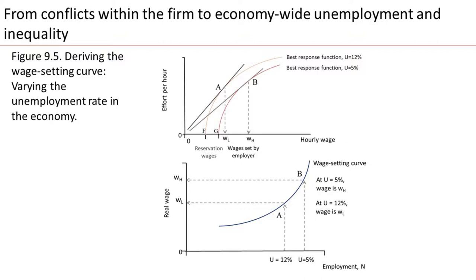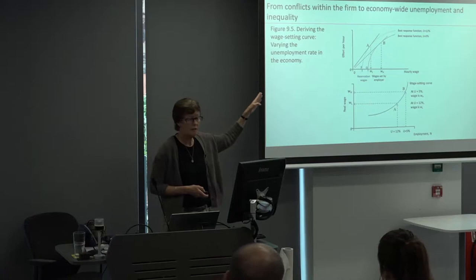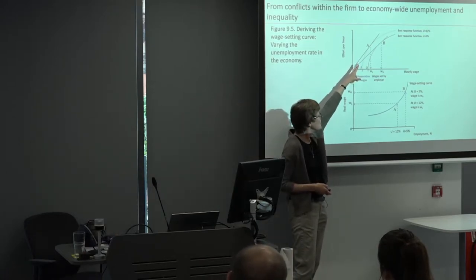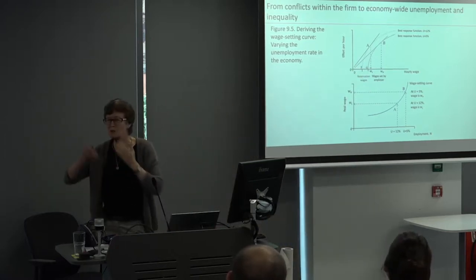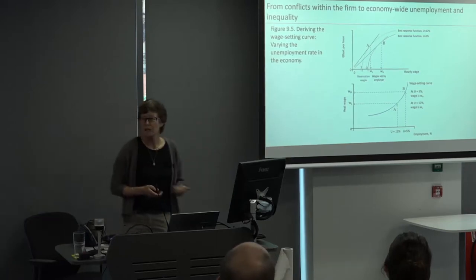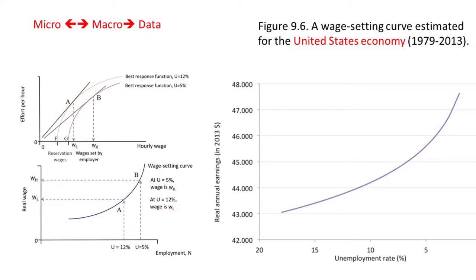We go from conflicts within the firm to economy-wide unemployment and inequality. This is the derivation of the wage-setting curve, going directly from the best response function varying the rate of unemployment. The wage-setting curve is going to be one of the crucial pillars of the macro model. We go from the micro modelling to the part of the macro model we'll use repeatedly, and then immediately to the data, showing what a wage-setting curve looks like using US data.